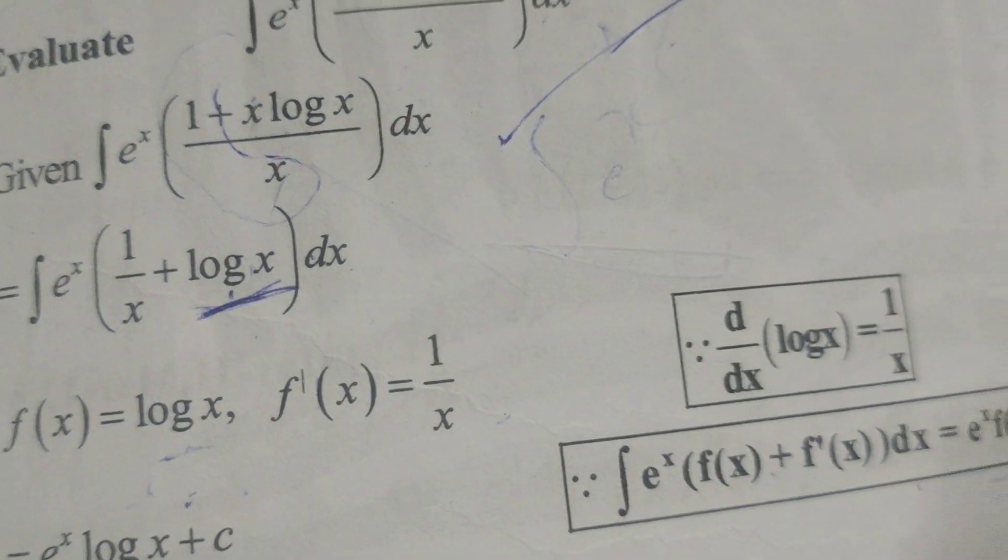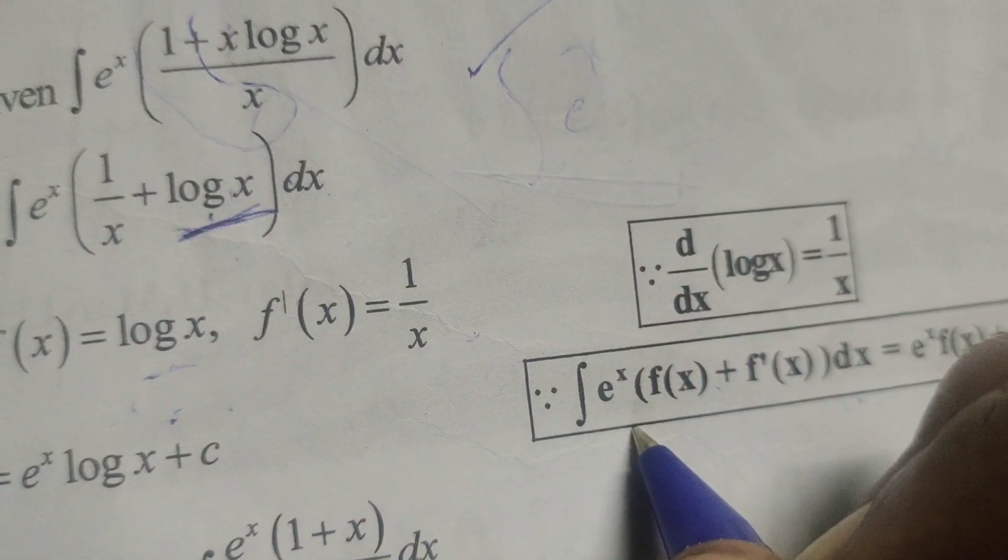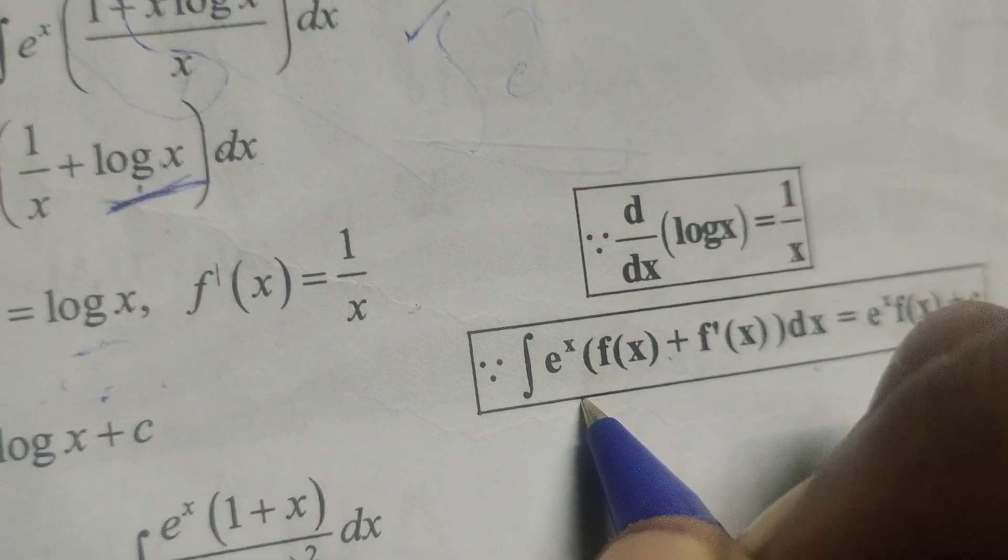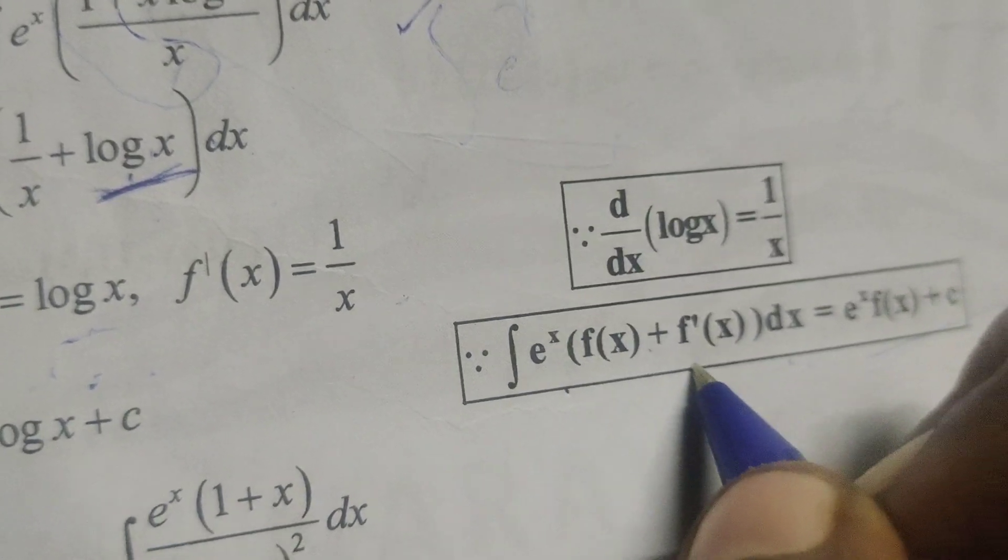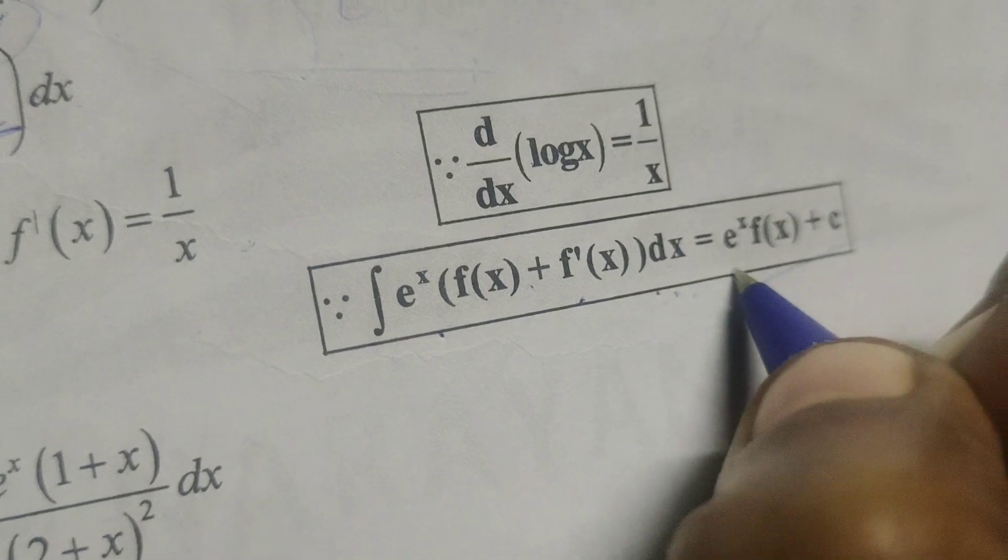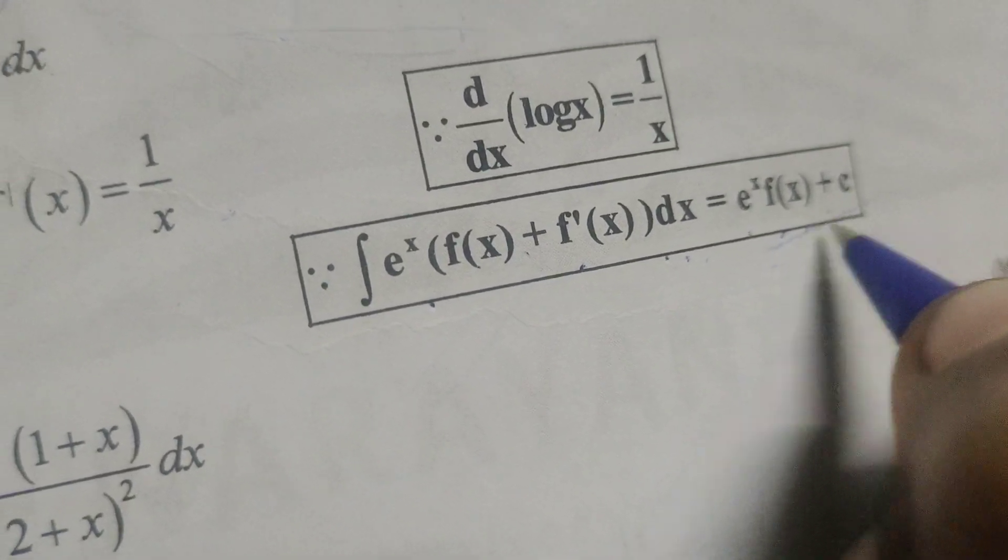Here applying the formula: integral of e power x into f of x plus f dash of x into dx equals to e power x f of x plus c.